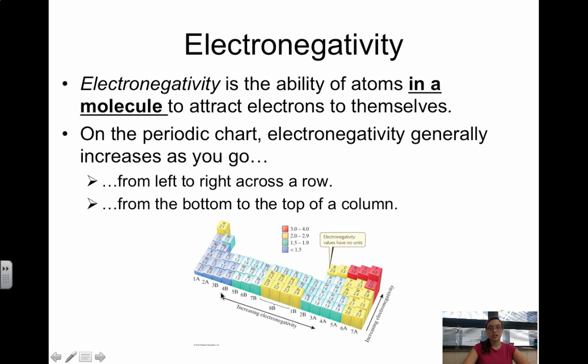So on the periodic table, electronegativity generally increases as you go from left to right and from bottom to top. So fluorine has the highest electronegativity value. Fluorine's electronegativity value is 4.0. It's important to remember that the larger the difference in electronegativity, the more polar the bond between them will be.